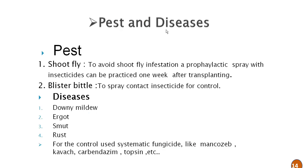Pests and diseases: in pests, shoot fly and blister beetle are the major pests of pearl millet. To avoid infestation of shoot fly, a prophylactic spray of insecticide one week after transplanting is recommended. In case of blister beetle, spray of contact insecticide is recommended for its control.